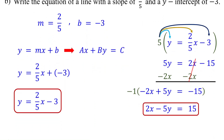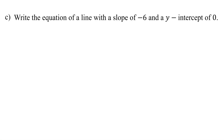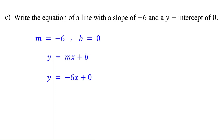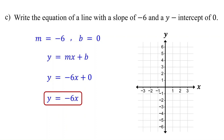Now it is your turn. Pause the video and write the equation of the line in slope-intercept form. First, identify the slope and y-intercept, then substitute these values into the equation. Since adding 0 doesn't change the value, this simplifies to y equals negative 6x. A y-intercept of 0 means the line passes through the origin — a y-intercept occurs when x is 0. For a lesson on graphing linear equations in slope-intercept form, check the link in the description.